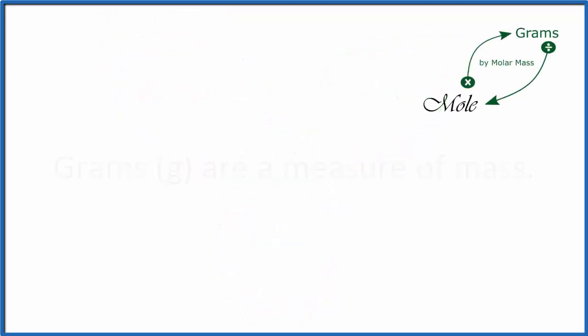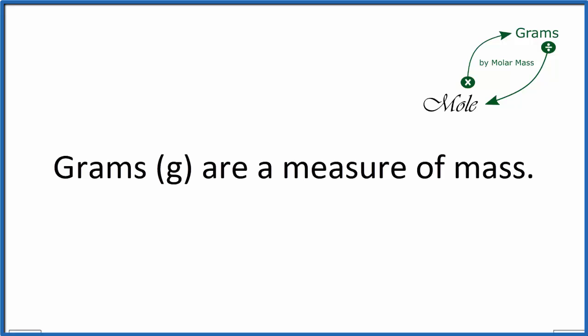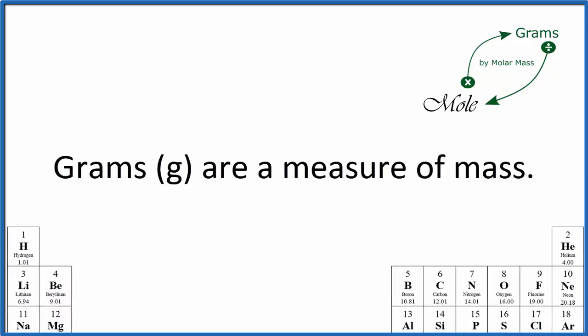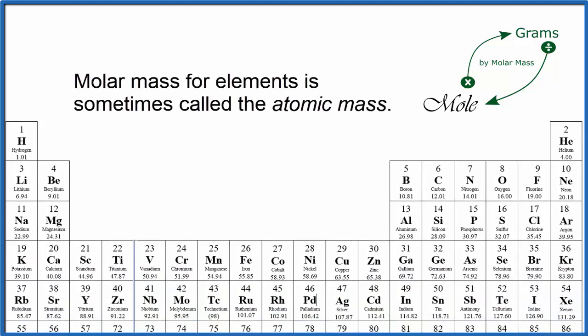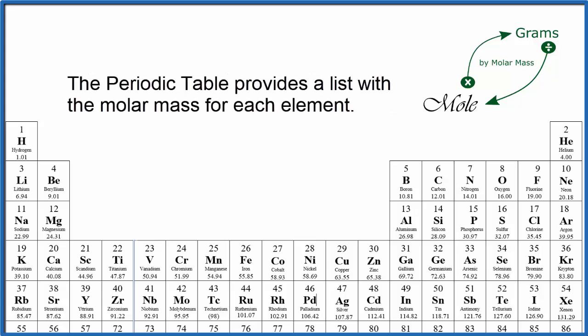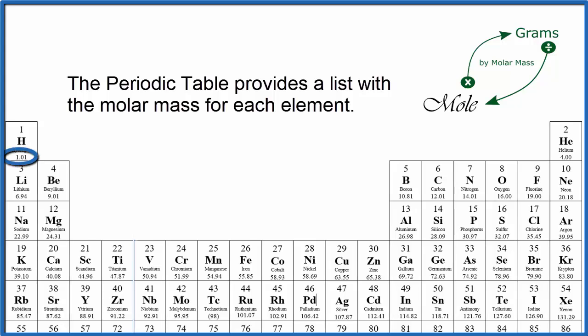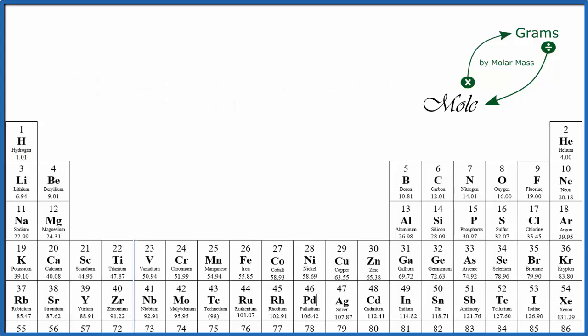When we're dealing with grams, we're dealing with mass, and we're dealing with the mass of these different elements on the periodic table. To convert from moles to grams and grams to moles, we have to figure out the molar mass. The periodic table provides a list of the molar mass for each element, so it's really convenient. That number is usually found right below the element symbol. So if we wanted to know the mass of one mole of sodium, we'd go to the periodic table, find sodium, it's 22.99, and the units, grams per mole.